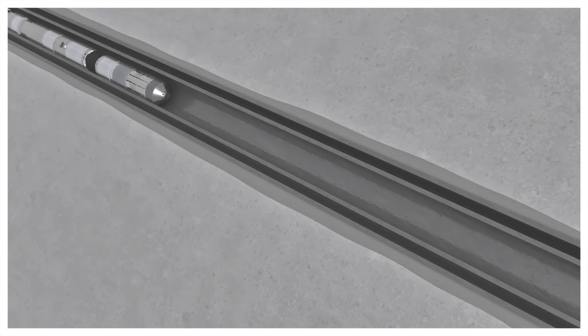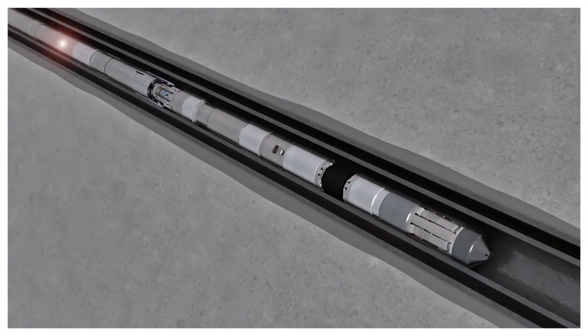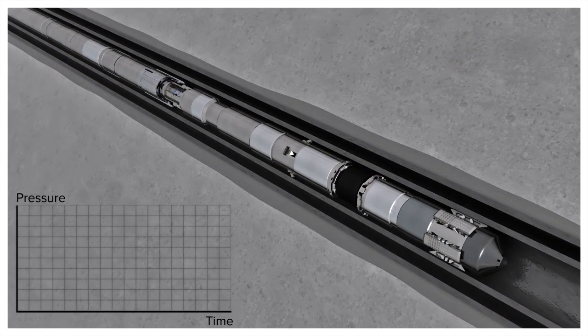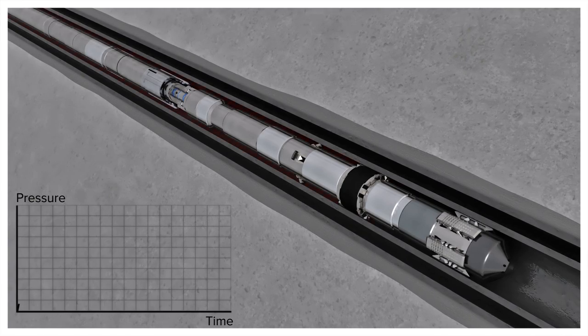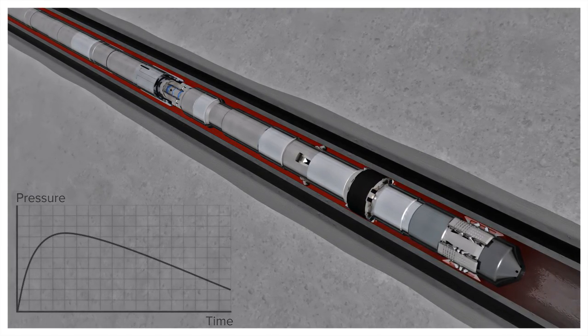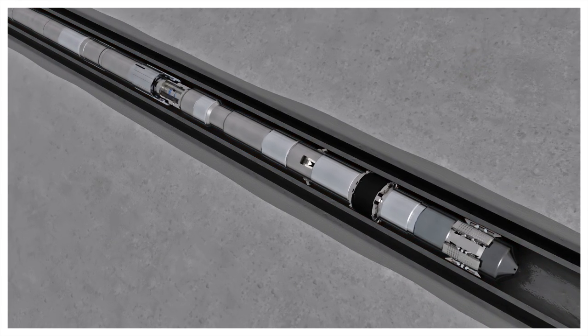The Torque Plug can be moved and reset when unforeseen well conditions cause the initial set to fail. In the event of a failed leak test, a signal to release the Torque Plug is sent to the electric manipulation tool.